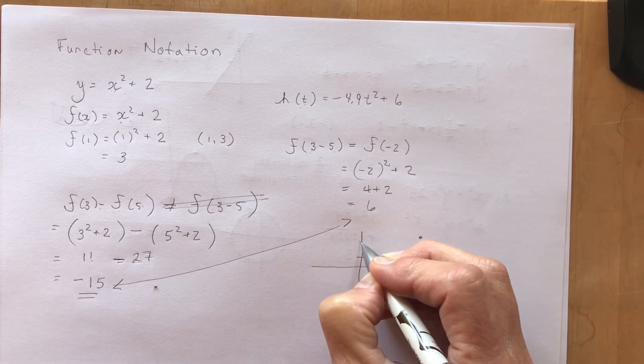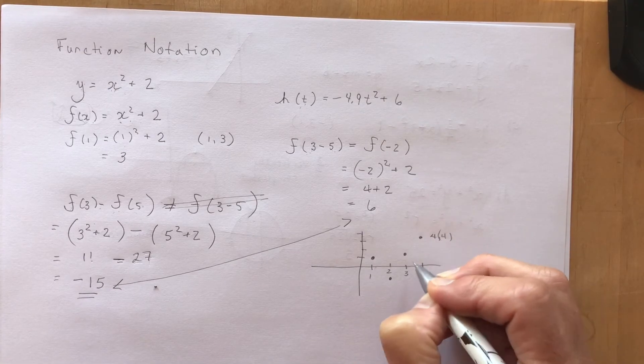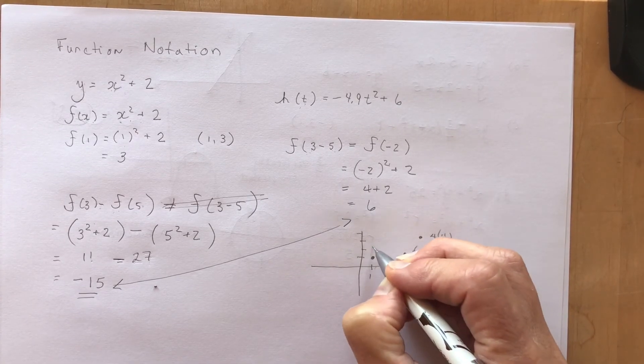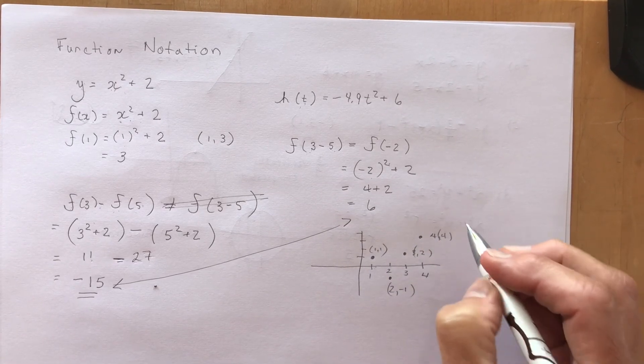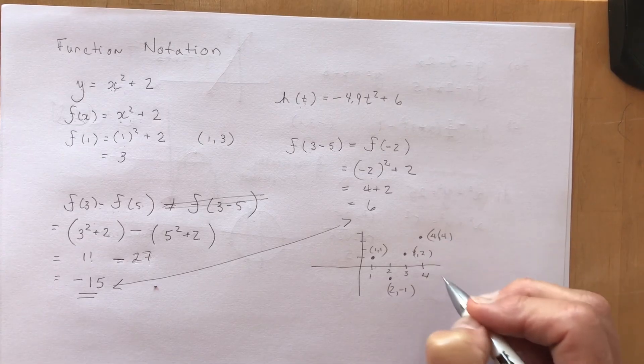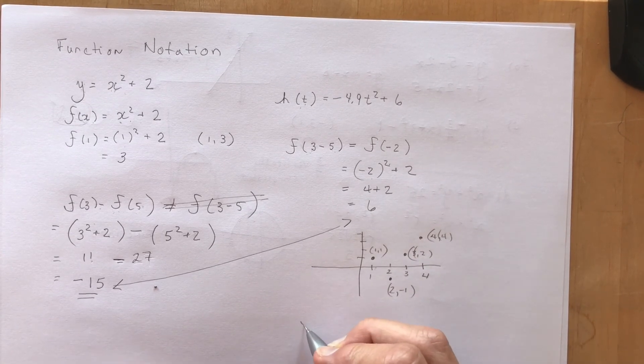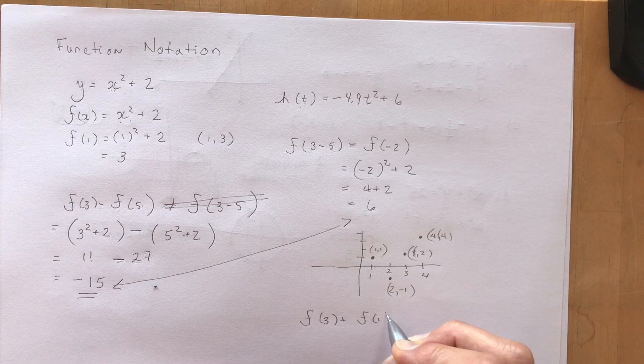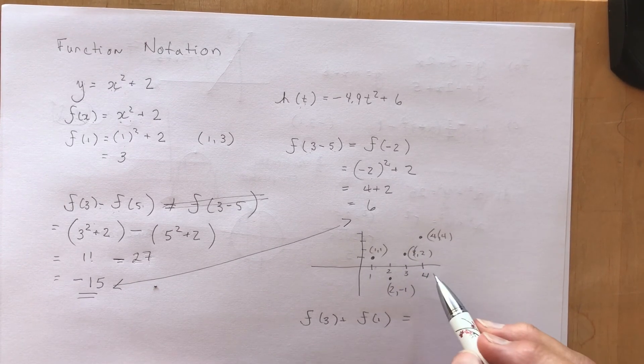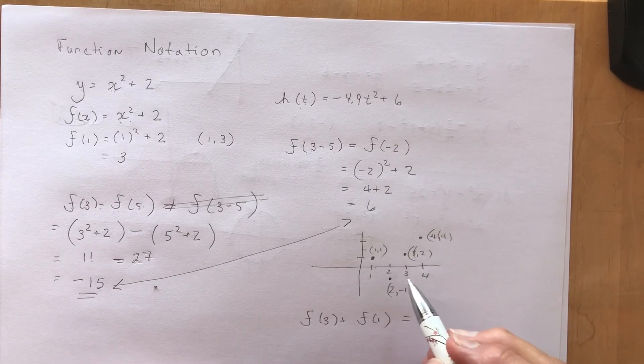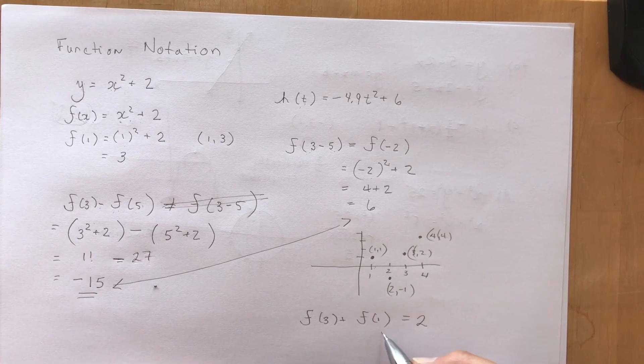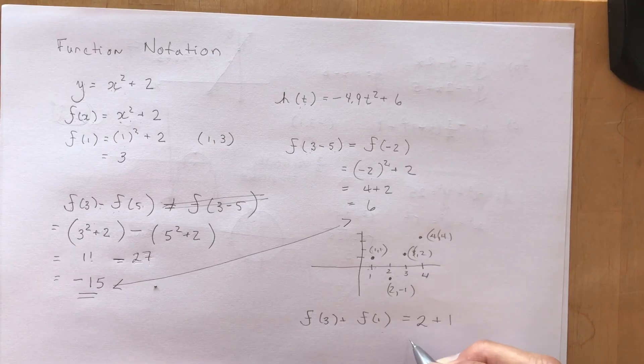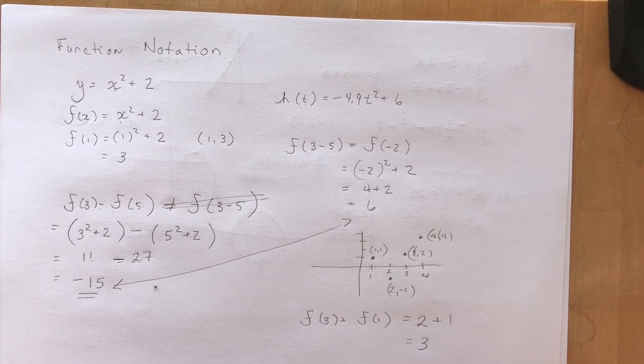So this point is going to be (4, 4), this point will be (3, 2), this point will be (2, -1), and this will be (1, 1). They don't write all these values in for you, then they ask you what is f at 3 plus f at 1. You don't have an equation to plug it into this time, you look at the graph. So f at 3 is 2 plus f at 1 is 1, that gives me 3.